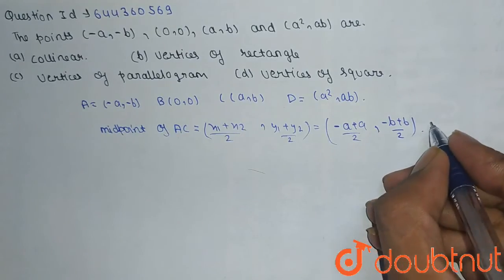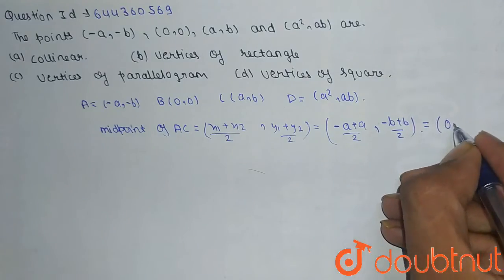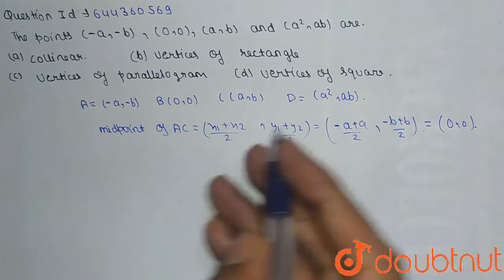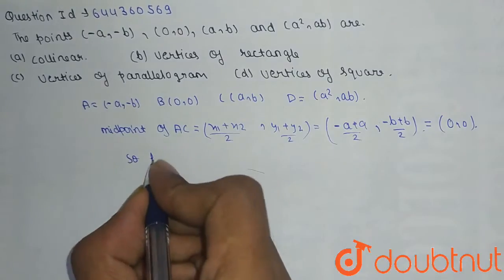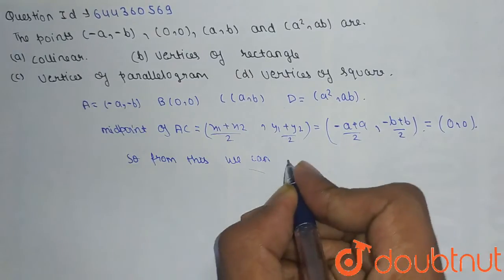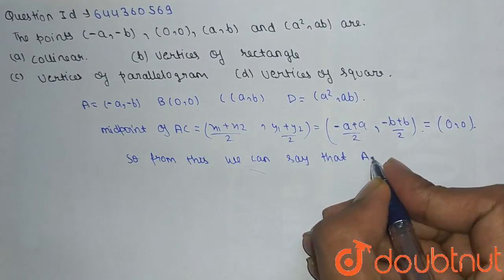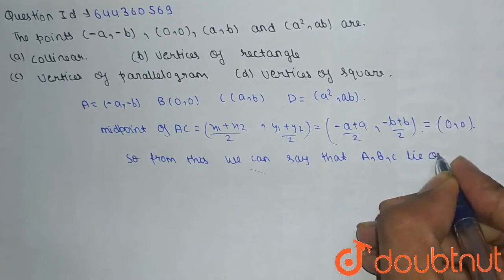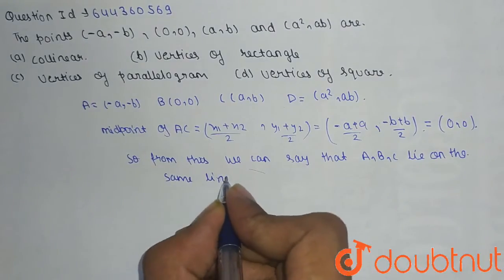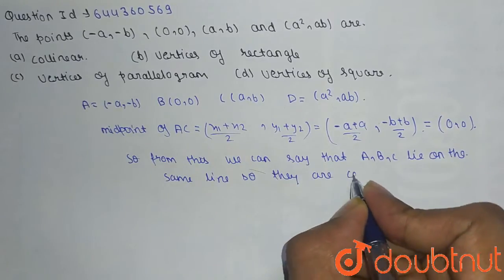So the coordinates of B - midpoint of AC is (0, 0) and this (0, 0) is the coordinate of B. So from this we can say that A, B, C lie on the same line. So they are collinear.